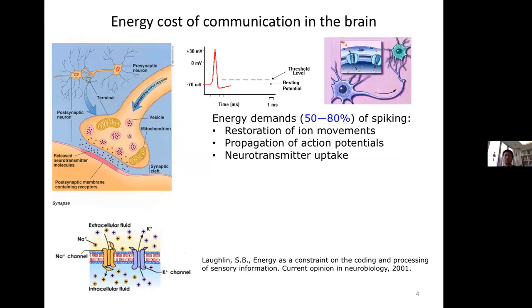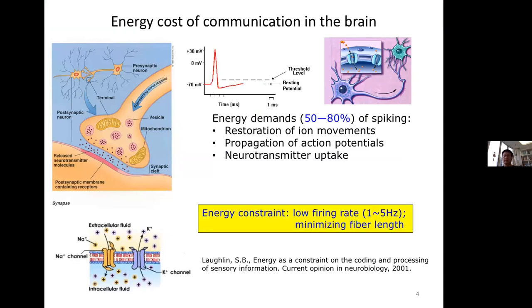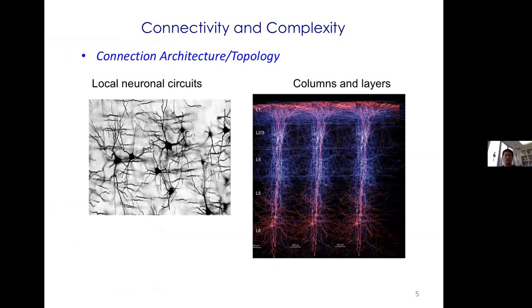From this energy constraint, we want a low firing rate — basically one hertz on average — and want to minimize the network fiber length to save energy. Looking at connectivity, locally the neural circuit looks like a random circuit, but at larger scales you see columns and layers, with blood vessels supplying energy via blood oxygen and glucose between columns.